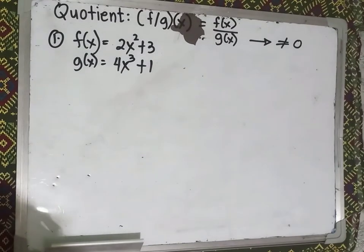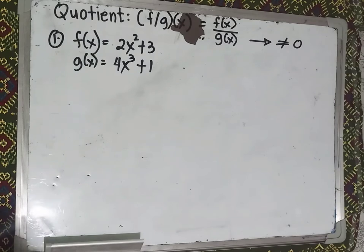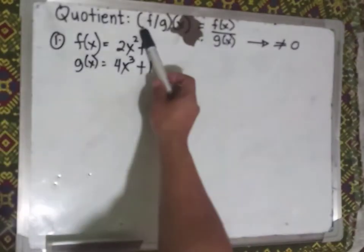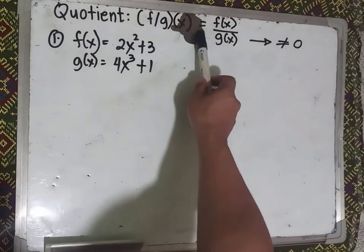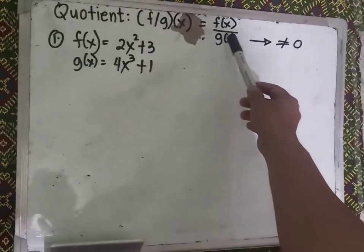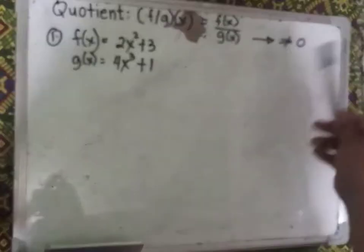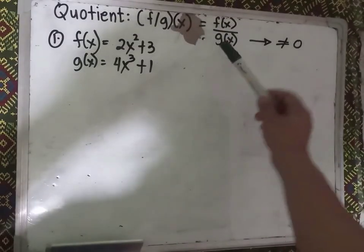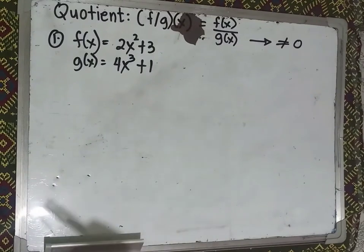Hello everyone, welcome to this mathematics tutorial. Today we will discuss how to find the quotient of a given function. To find the quotient of two functions, put the first one over the second. The formula is: (f/g)(x) = f(x)/g(x), where g(x) is not equal to zero, because if the denominator is zero, the quotient is automatically undefined.